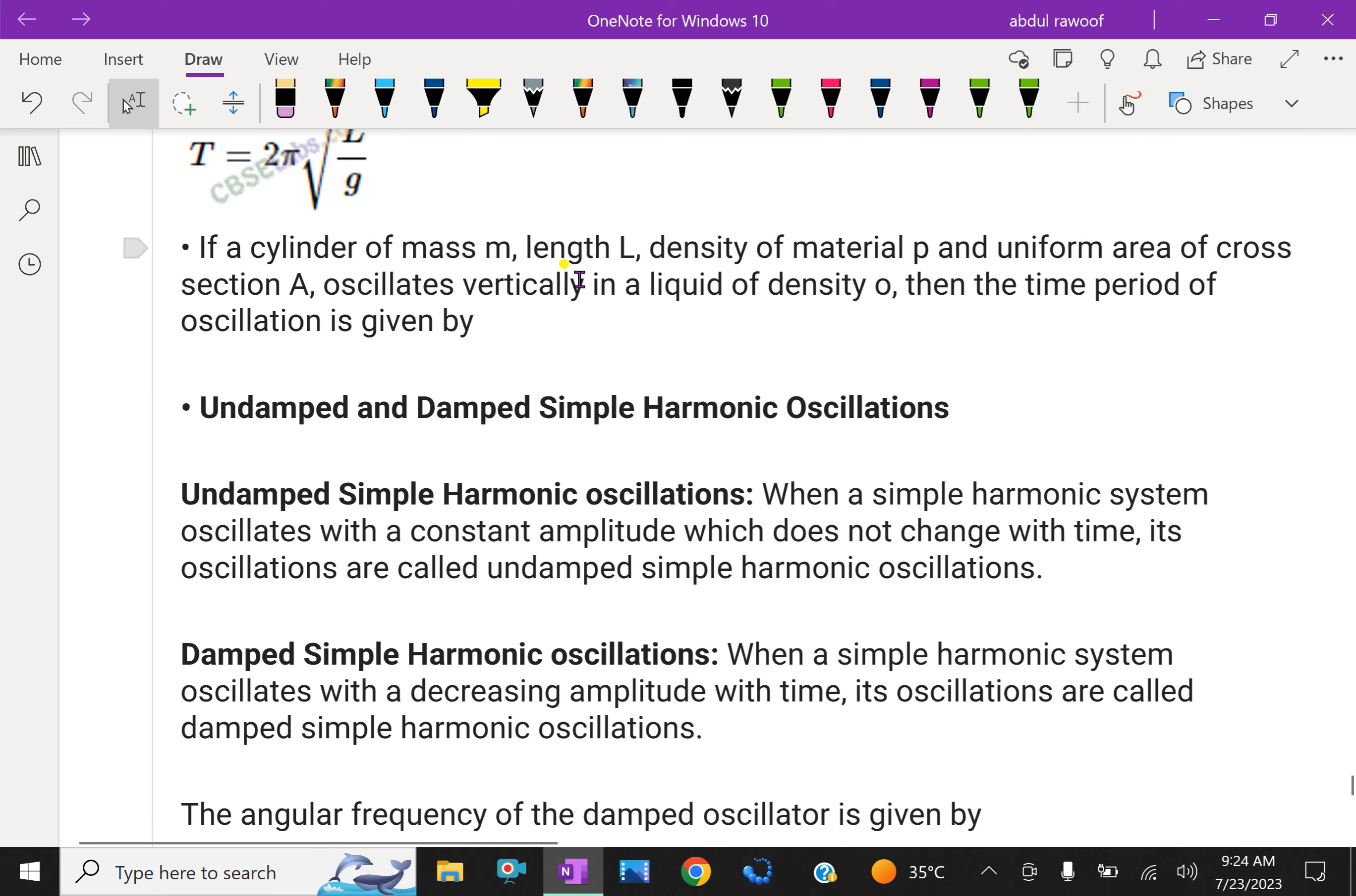If a cylinder of mass M, length L, density of material ρ, and uniform area of cross-section A oscillates vertically in a liquid of density σ, then the time period of the oscillation is given by using those things in the formula.